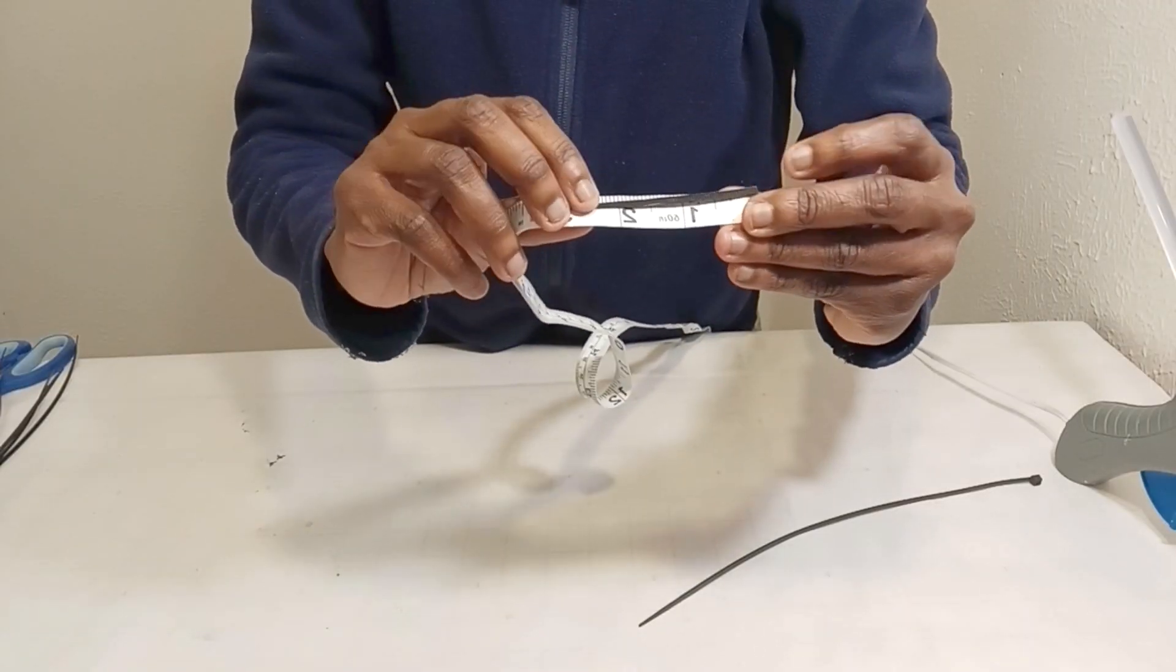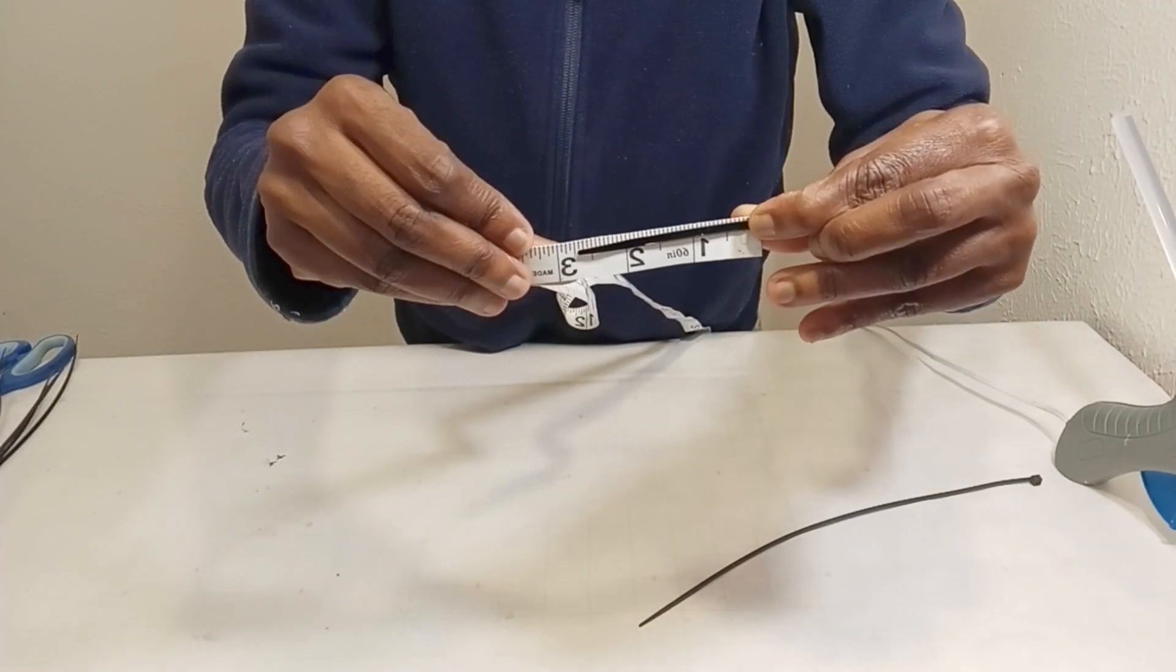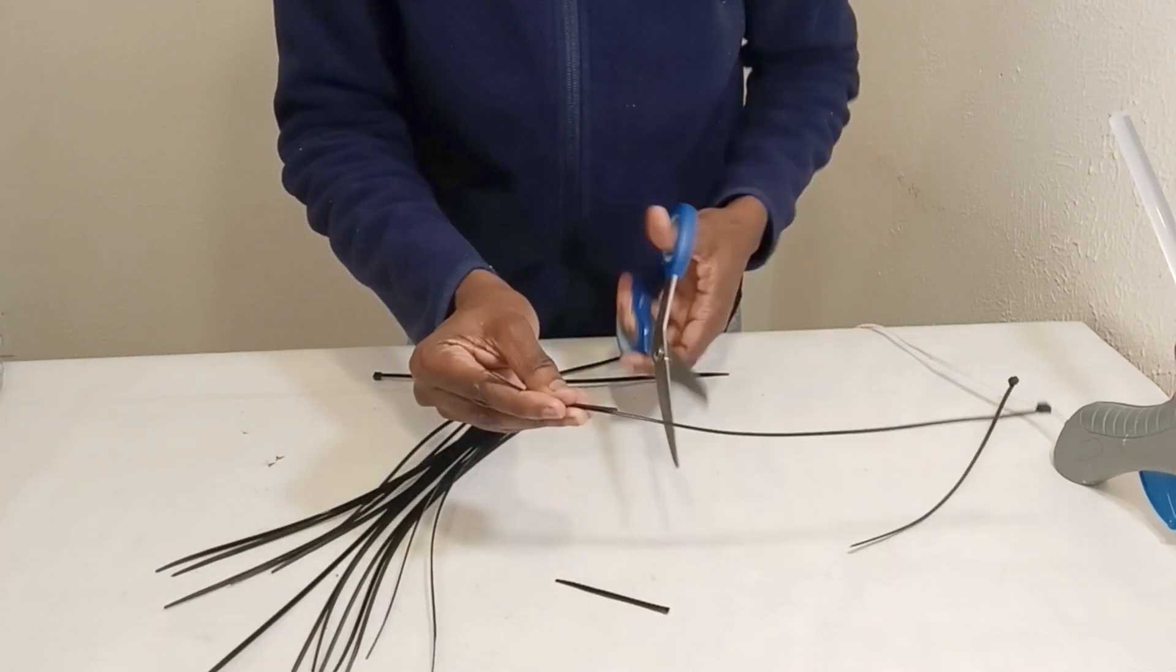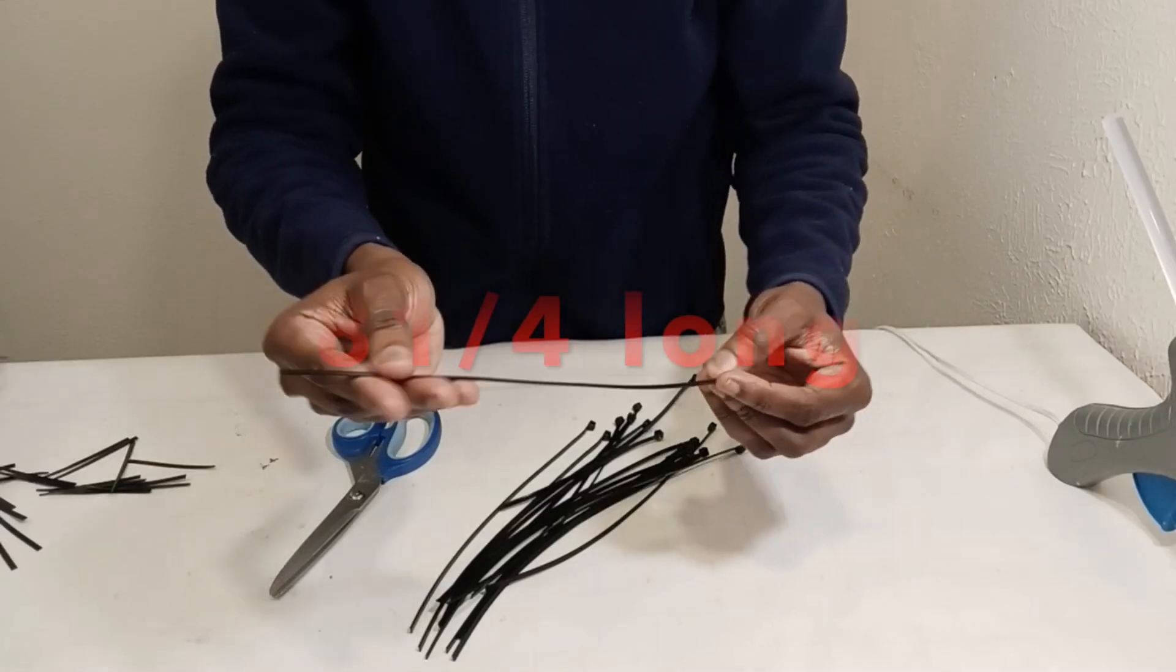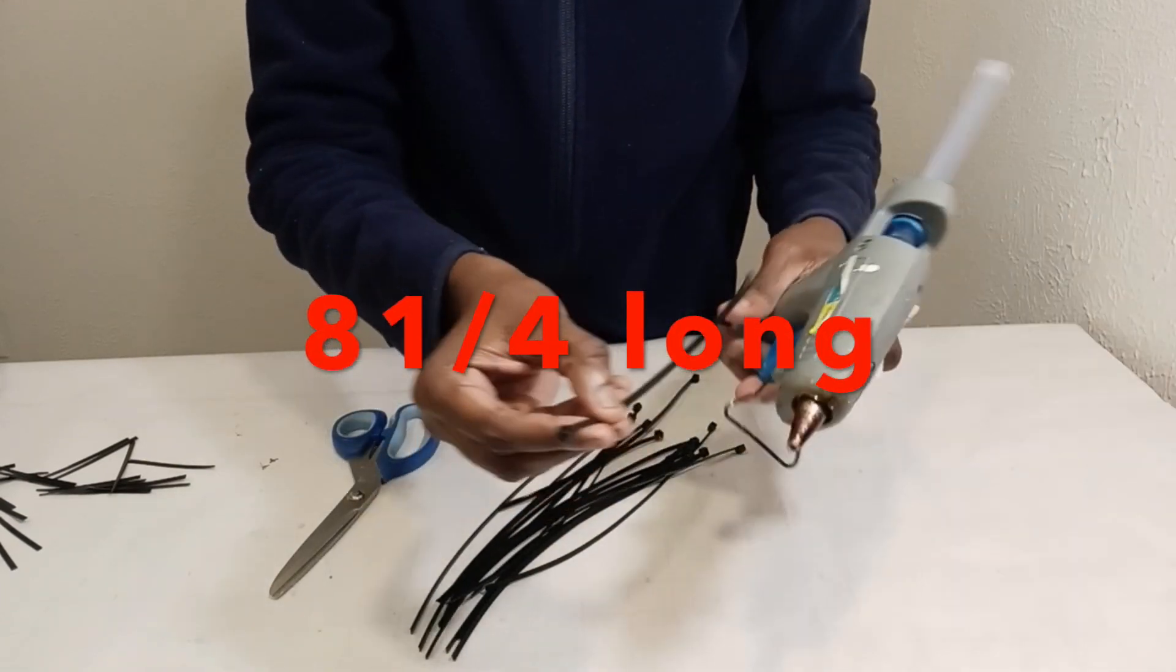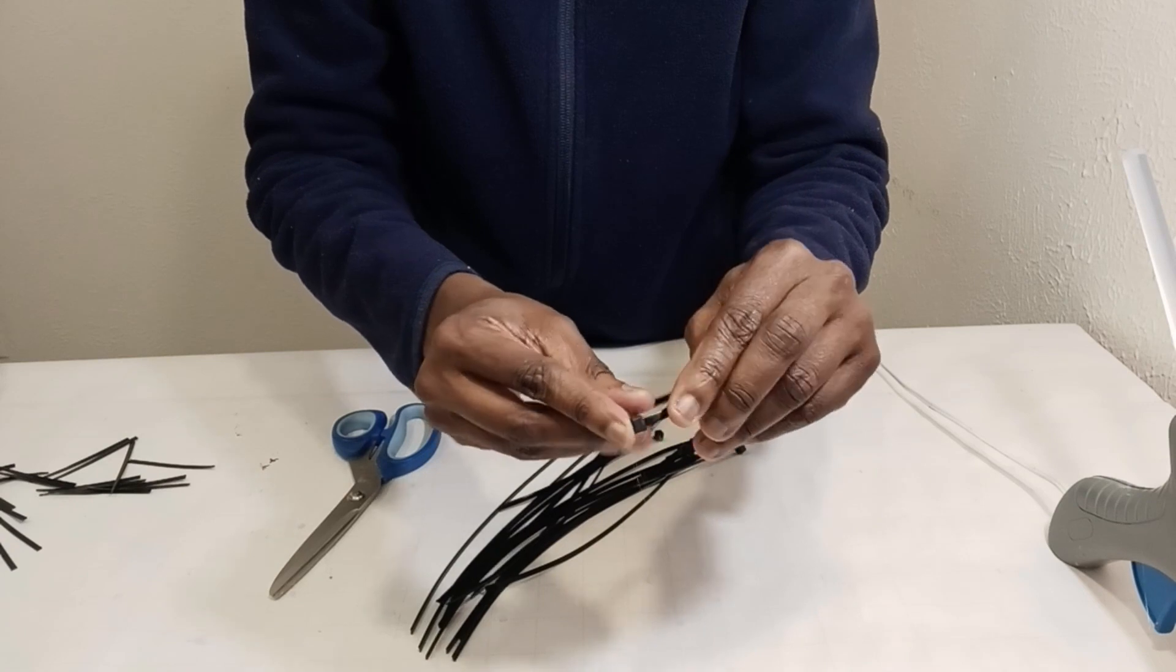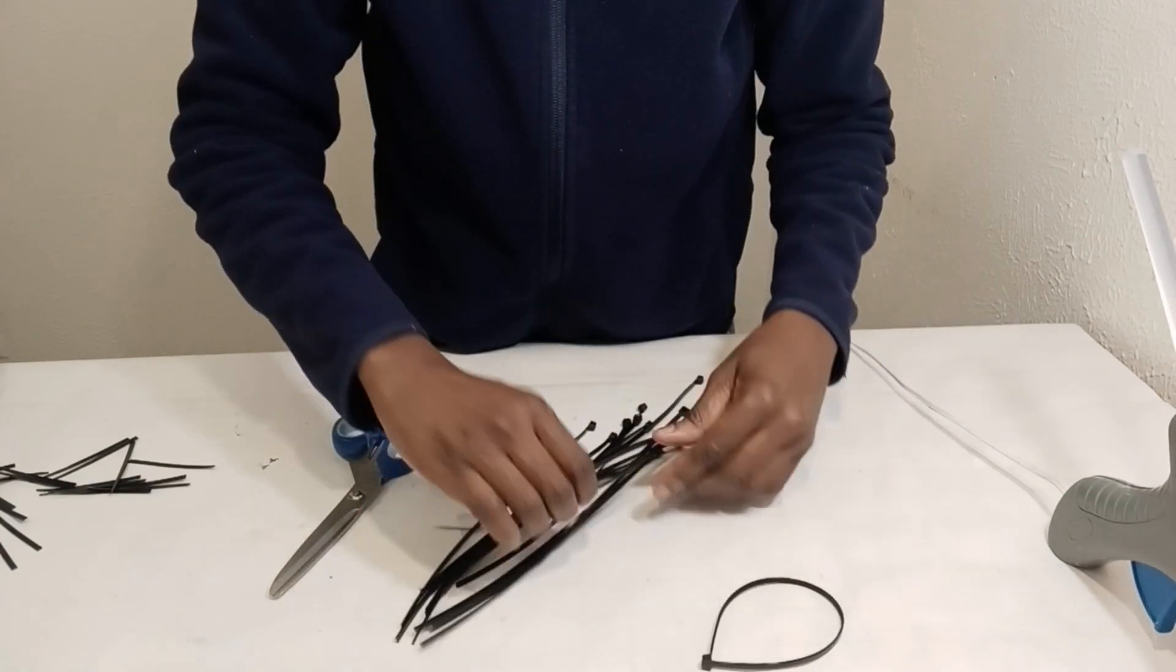For a smaller size of the same design, I cut the zip ties 2 and 3 quarter inch less, leaving 8 and a quarter inch. And I basically repeat the same step by gluing the ends together. I also have 16 pieces of these smaller size.